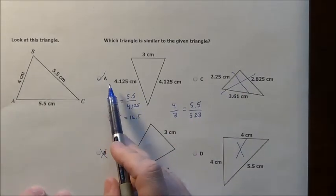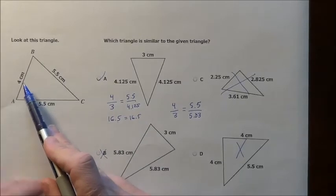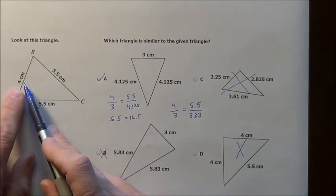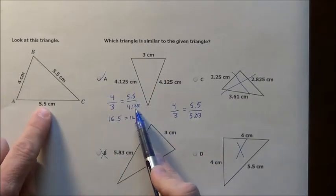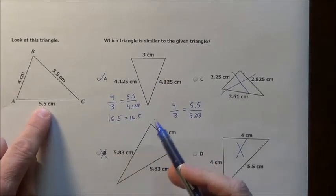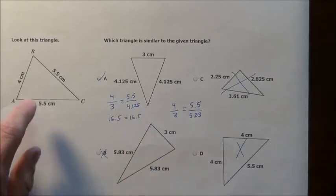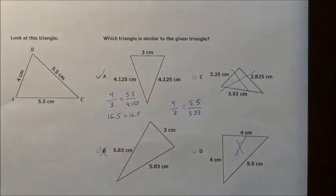But again, what I do to check and see that they are similar, is I see that their sides are in proportion to one another. 4 is to 3 as 5.5 is to the 4.125. Cross multiply. See if you get equal numbers. You do. So you know those two triangles are similar. There is problem 26.